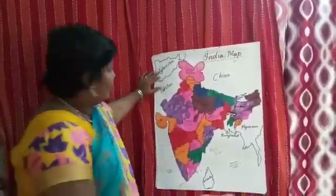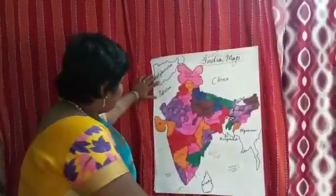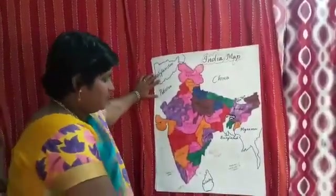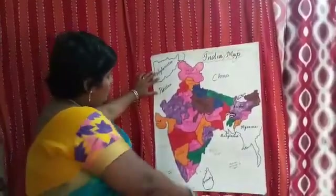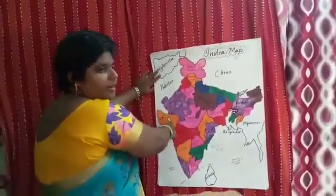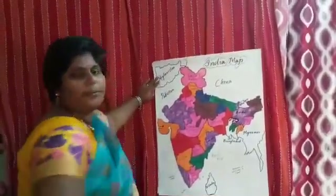And Pondicherry is located here, Goa, and Dehradun — they are located here on the map.